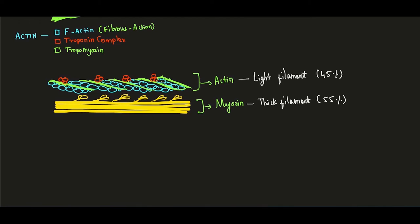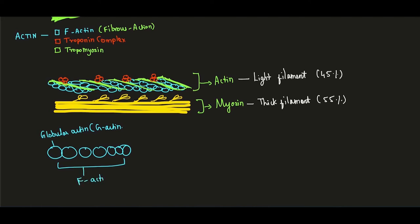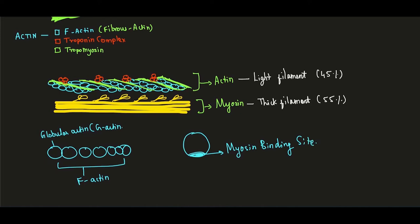Now for the individual structure of actin: actin has three components — F-actin, troponin, and tropomyosin. F-actin is fibrous actin, formed by polymerization of G-actin (globular actin) units. Within the globular actin structure, there is a region called the myosin binding site. Under normal resting conditions, this myosin binding site is present on each G-actin unit.